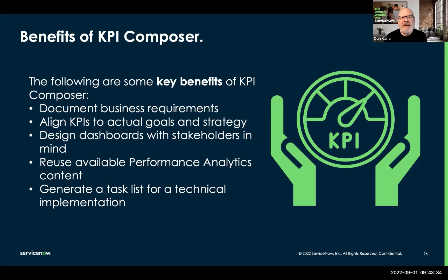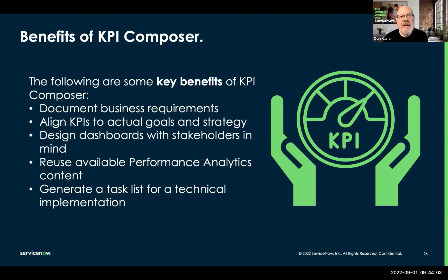I want to look at every case opened at the level one service desk contact group. Within those, I want to count the number of cases that included a reference to one or more knowledge articles — perhaps via a checkbox or field on the form. Then I take that second metric, the number that touched knowledge articles, divide it by the first metric — the total number of cases touched by level one — to come up with a percentage. When the builder creates this metric in the platform, they have all the instructions for exactly what they need to do.